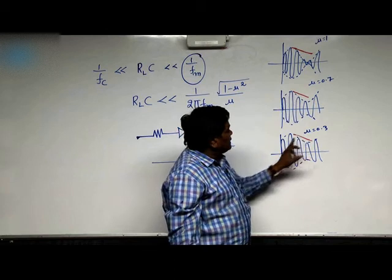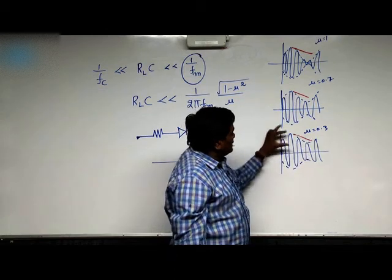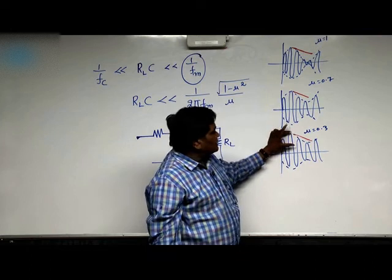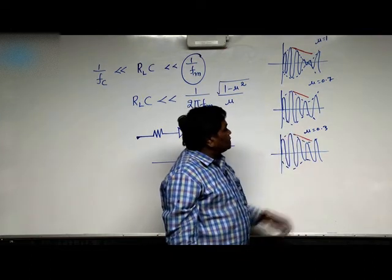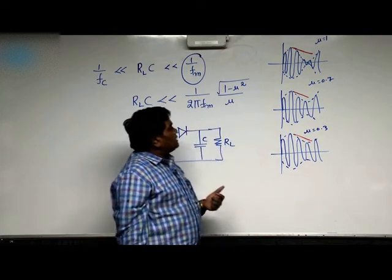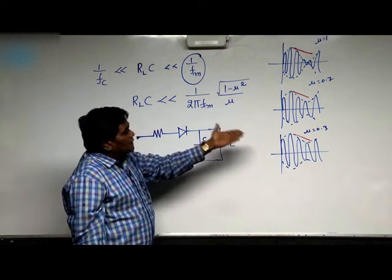Now if you see here, when mu is 0.3, the amplitude variation is even very, very less. In this case, almost I am in a position to track the envelope detector. So remember to avoid diagonal clipping,